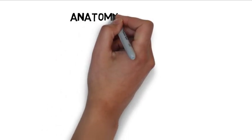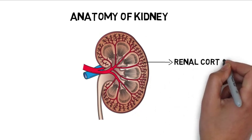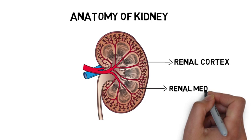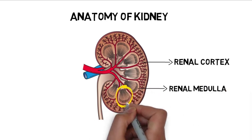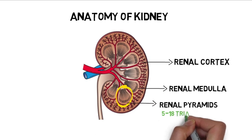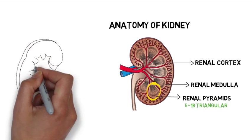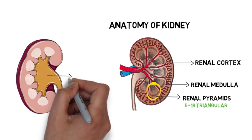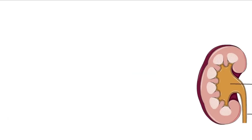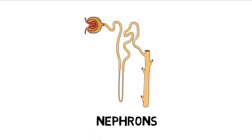Anatomy of the kidney: The outer part of the kidney is called the cortex, which is red in color, whereas the inner part is called the renal medulla. The renal medulla contains renal pyramids, which are triangular structures. There are about 5 to 18 straight renal pyramids in each kidney. The kidney has a funnel-shaped structure called the renal pelvis, which is the dilated part of the ureter and acts as a funnel for urine. Kidneys have units called nephrons, which carry out the process of filtration of blood and form urine.